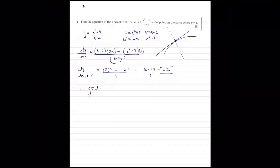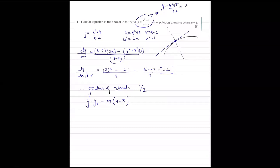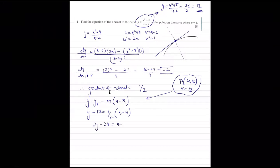Therefore, the gradient of the normal is going to be 1 upon 2, using the concept M1 times M2 equals to negative 1. For the equation, I just need one more thing — the coordinate. When x is 4, y is going to come out as 12. So the point is (4, 12). Using y minus y1 equals M times x minus x1, the equation of the normal simplifies to 2y equals x plus 20.